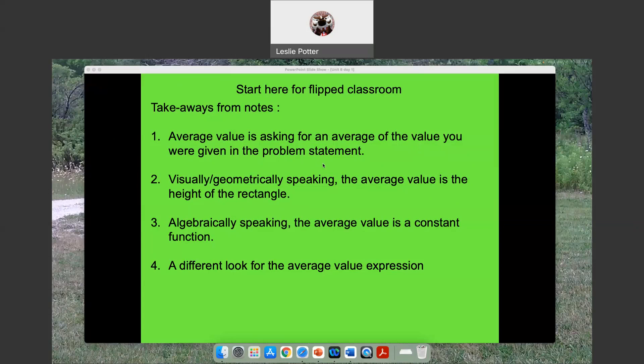So for instance, average value would be like, give me the average position. That wouldn't be an average rate of change in position. That means I'm asking you to take all of the positions and average them. Does that make sense? So you're giving me back like an average distance away that you would be.